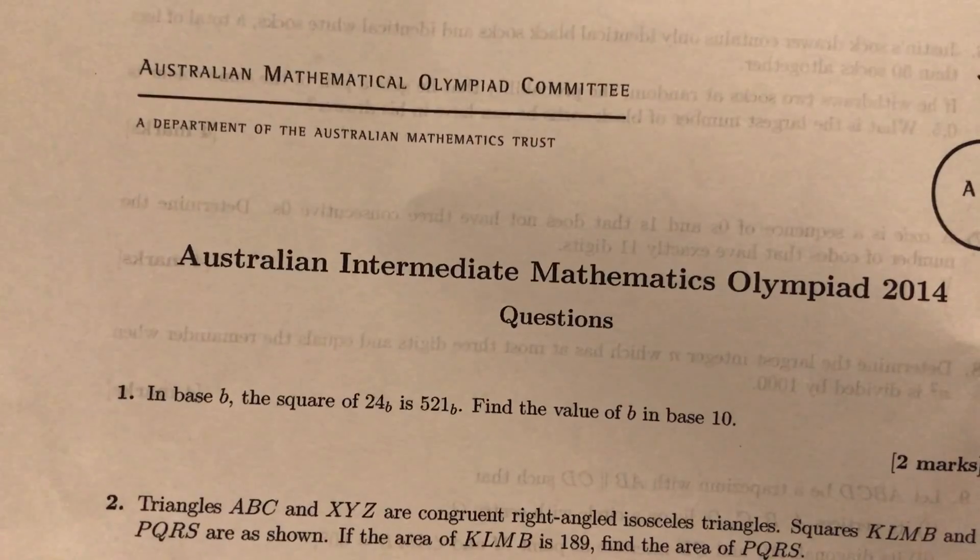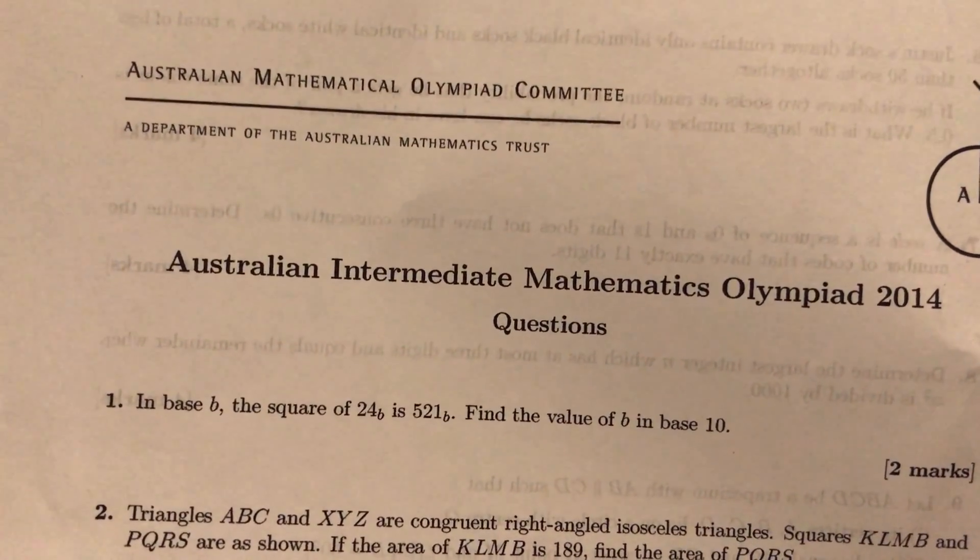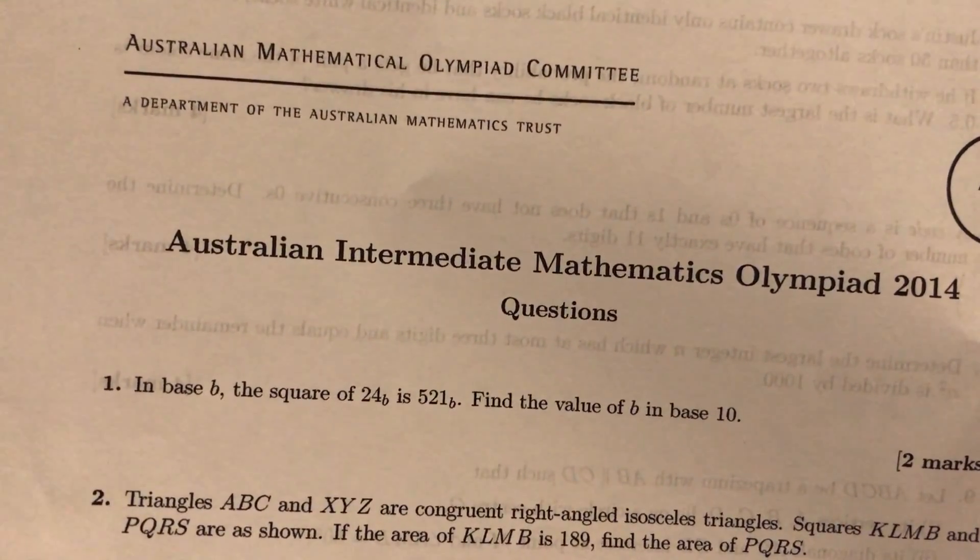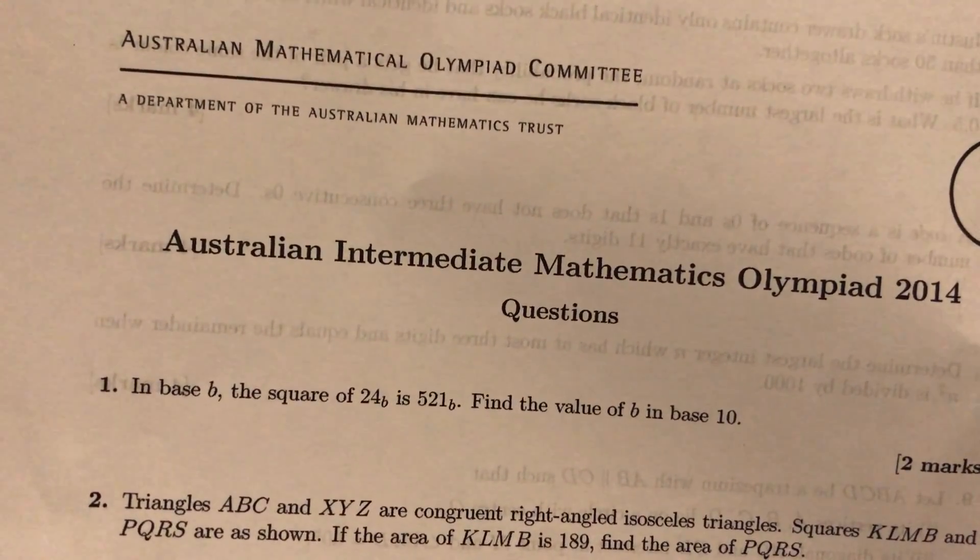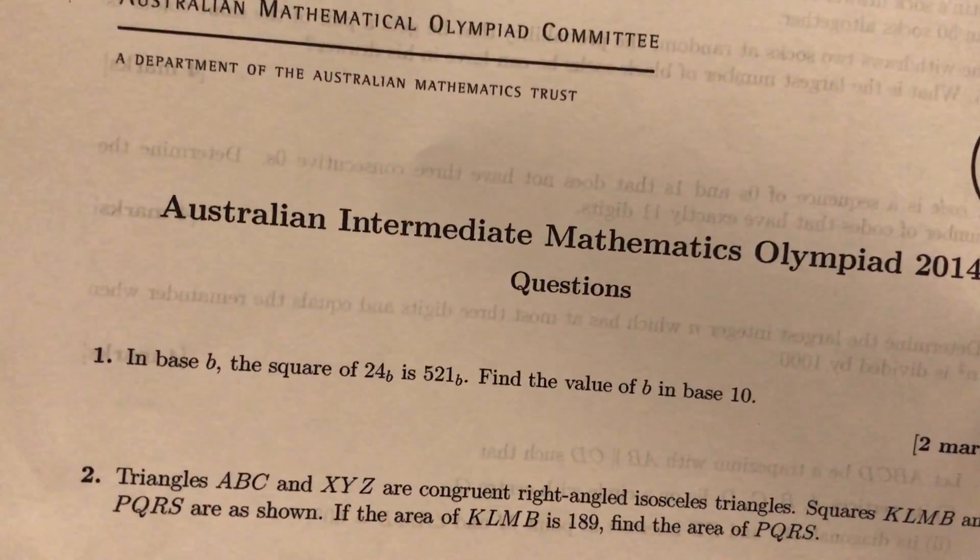So 24 squared in base B is 521. You can notice pretty quickly - I'm going through the way I'm doing the problems, not just going through the solution, so it's more important to understand the process. 24 squared is more than 521, so if it's 521 in base B, then B should be bigger than 10.